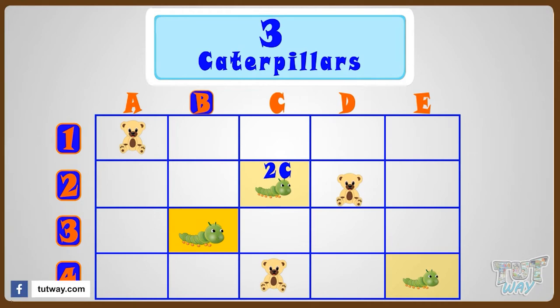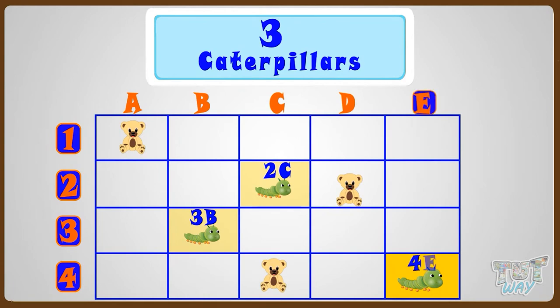So we can name its position as 3B. And the third caterpillar is at fourth row and E column. So its position can be named as 4E.